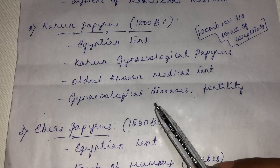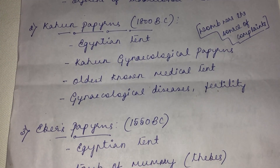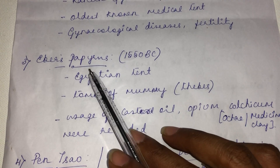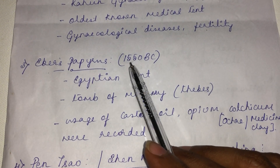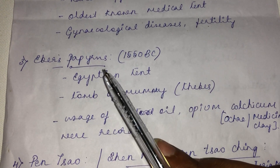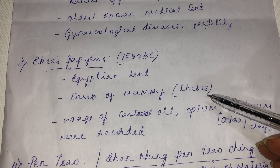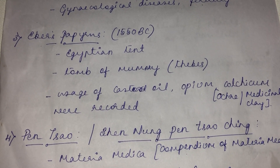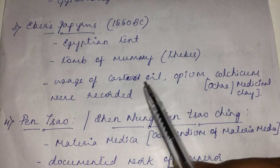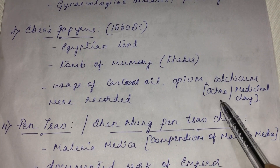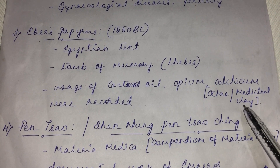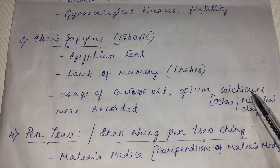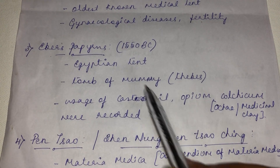Similar to the Kahun Papyrus, there was another Egyptian text named the Ebers Papyrus, dating to 1550 BC. It was collected from the tomb of a mummy. This text documents the usage of castor oil, opium, colchicum, and ochre — also called medicinal clay — to treat certain diseases.